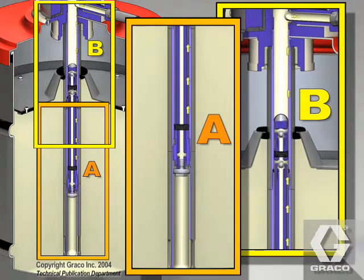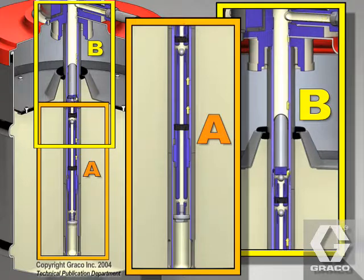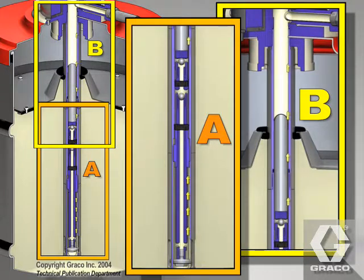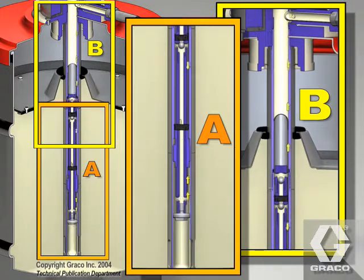The grease is pushed in with a follow plate, inductor, or RAM. The follow plate, inductor, or RAM applies a force to the container of grease to prime the pump. This animation shows the use of a follow plate.